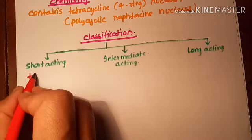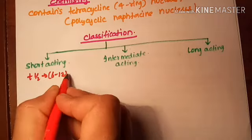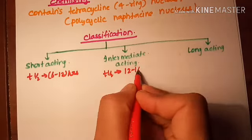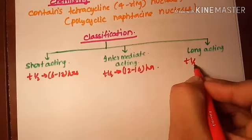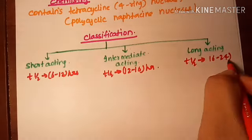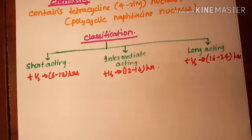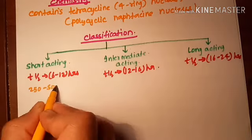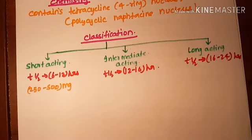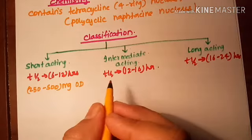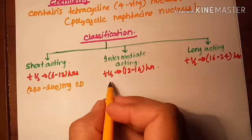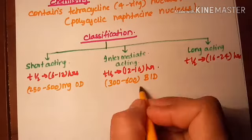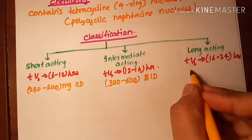The half-life of intermediate tetracyclines is 12 to 16 hours, and that of long-acting tetracyclines is about 16 to 24 hours. Short-acting tetracyclines are given in doses of 250 to 500 mg once a day, and intermediate tetracyclines are given 300 to 600 mg twice a day (BID).